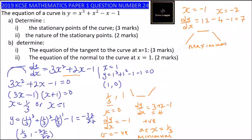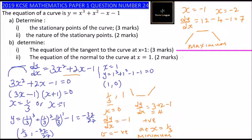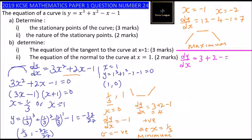Part (b): determine the equation of the tangent to the curve at x equals 1. We find the gradient by substituting x equals 1 into dy/dx: 3 times (1) squared plus 2 times 1 minus 1 equals 3 plus 2 minus 1 equals 4. So the gradient of the tangent is 4.